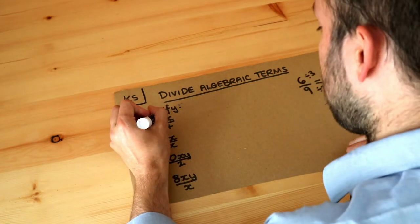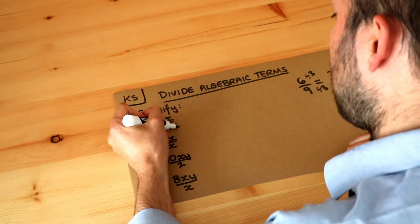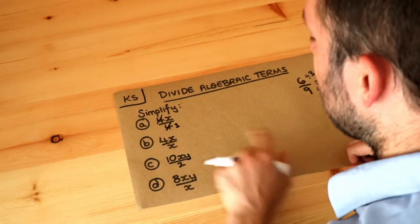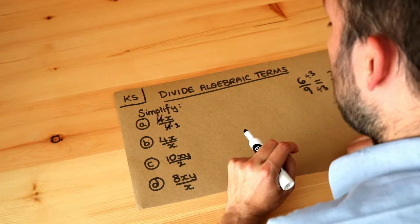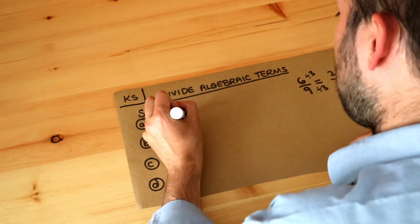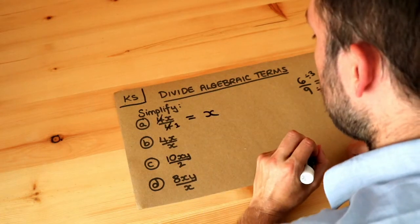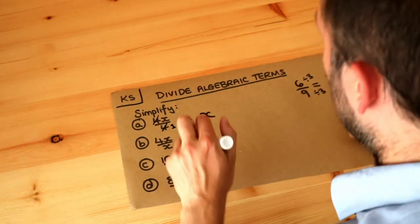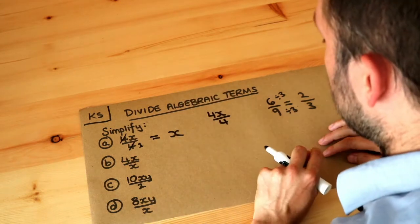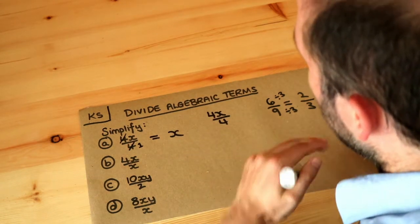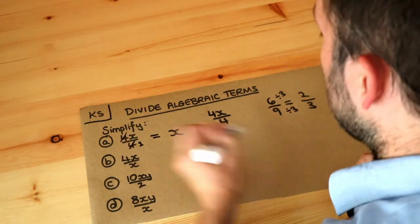So we could actually cross out these fours. If you divide four by four, it's one — so you effectively have one there, and then you're just left with x over one. But anything divided by one is just itself, so x divided by one is just x. Another way of thinking about it: if I had four lots of x and I split that into four, then I would just have one lot of x. So the answer would be x.